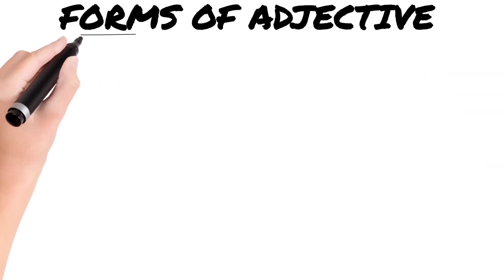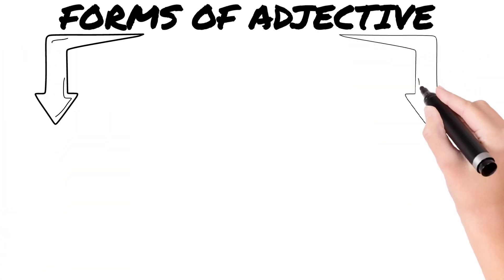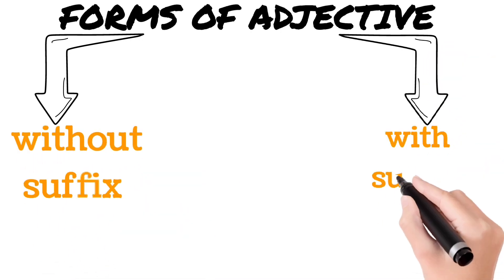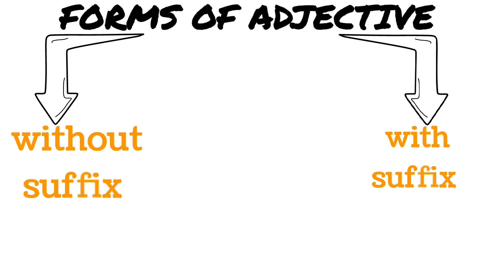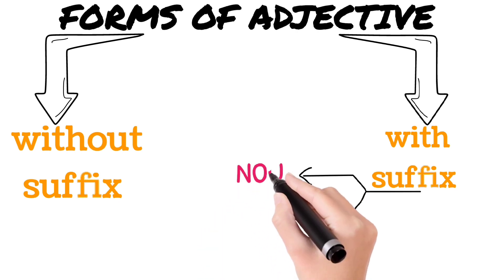Then in our next stage: forms of adjectives. Adjectives can be formed in two ways: without any suffix, and with a suffix. Without any suffix, there are thousands and thousands of adjectives — you can find them in a good dictionary. With a suffix, adjectives can be formed from nouns, and secondly from verbs.